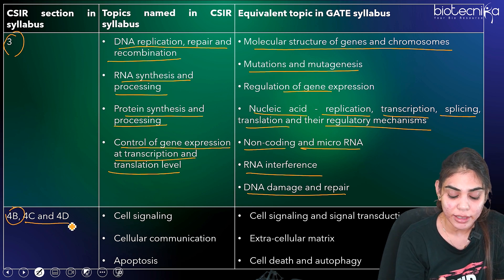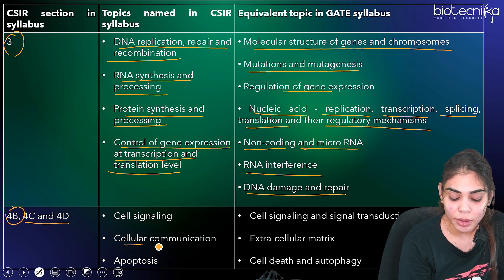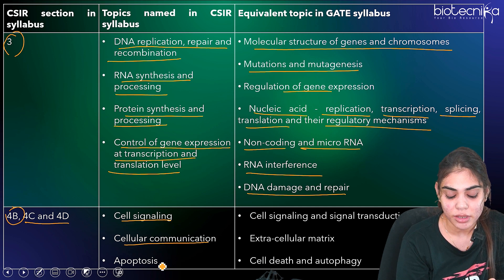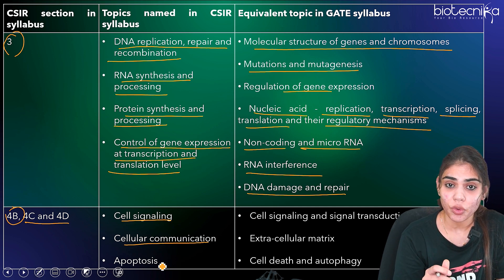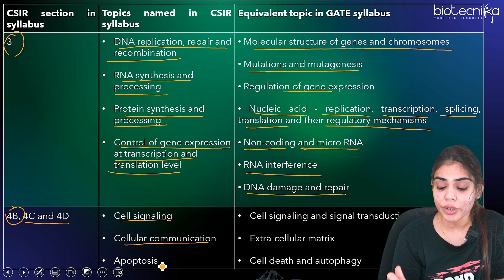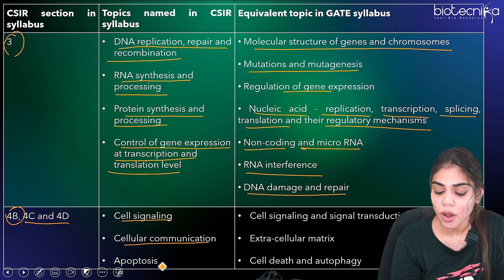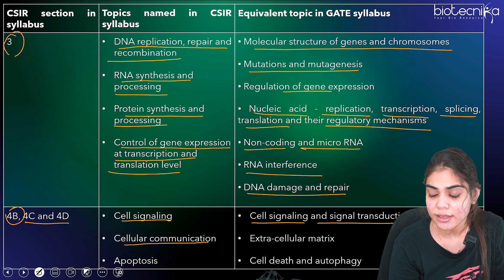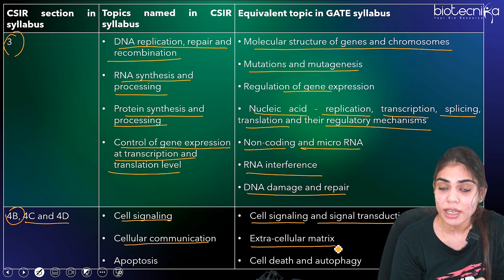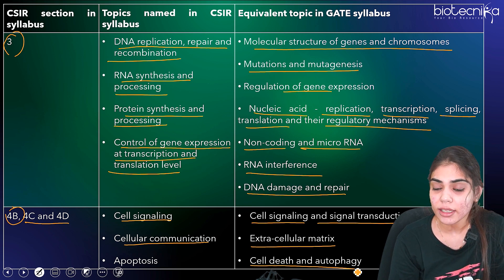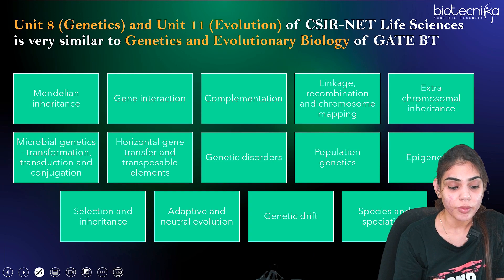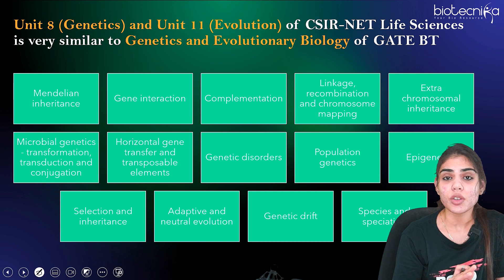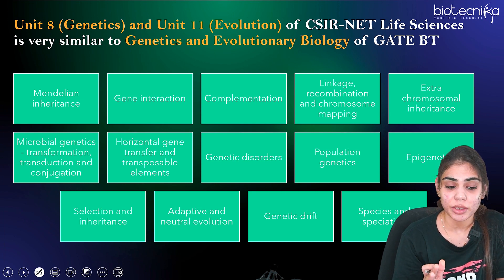If you are preparing completely for CSIR Unit 3, that will be a great help because you are covering a major chunk of GATE Biotechnology genetics and molecular biology. Coming to 4B, 4C, and 4D parts, which include cell signaling, cellular communication, and apoptosis — covering these completely means you are covering cell signaling and cell transduction, extracellular matrix, as well as cell death and autophagy for GATE Biotechnology.